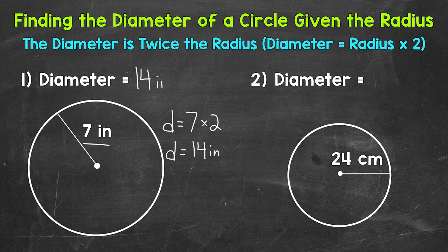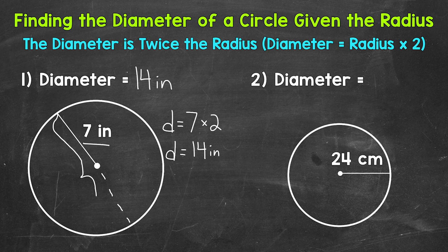Again, our diameter for number one is 14 inches. That radius goes from the center to any point on the circle. Our diameter goes all the way across the circle, so we are doubling that radius — the distance from this point through the center to this point over there — and that's going to be 14 inches.